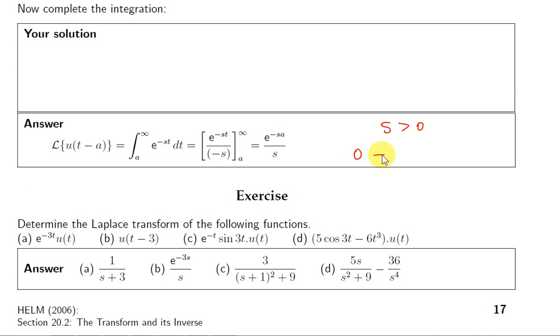And then what do we get? We have minus this thing here with a in for t. That's e^(-sa) divided by minus s. Two minuses give us the plus here.